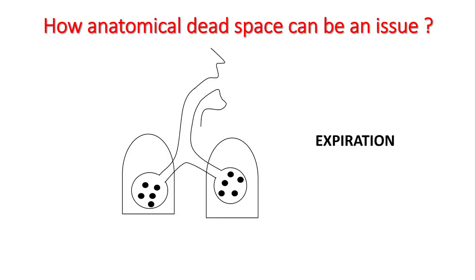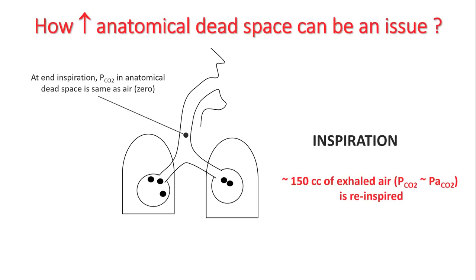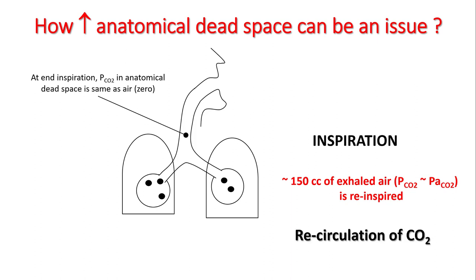Anatomical dead space can be a problem because it results in recirculation of carbon dioxide. The last part of end expiration — the emptying of your alveoli — still remains in your anatomical dead space, so this gas is still rich in carbon dioxide and is inhaled back in during the next inspiration. Around 150 cc of exhaled air enriched in CO2 is re-inspired, resulting in recirculation of carbon dioxide. With larger anatomical dead space, there will be more volume of recirculated air.